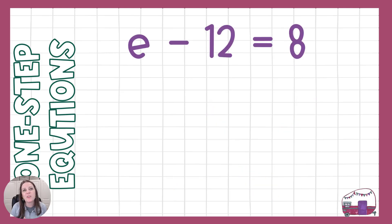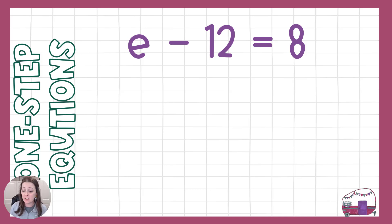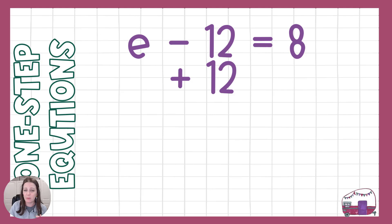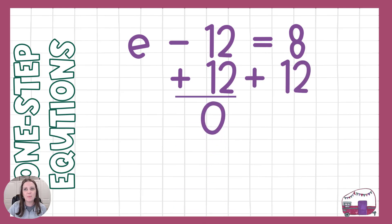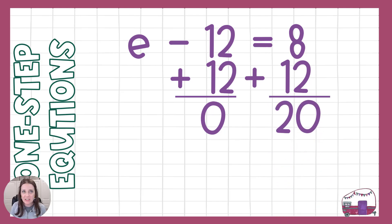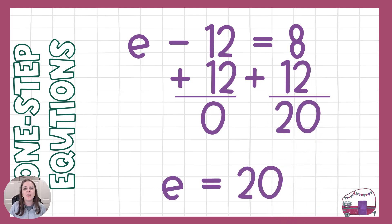Last problem in our notes today: e minus 12 equals 8. We're going to do the opposite of minus 12, which is positive 12. Those opposite pairs make 0. Going to the other side and doing the same thing to keep everything equal: 8 plus 12 is 20. So e equals 20. And I can plug that in and check it: 20 minus 12 is 8.